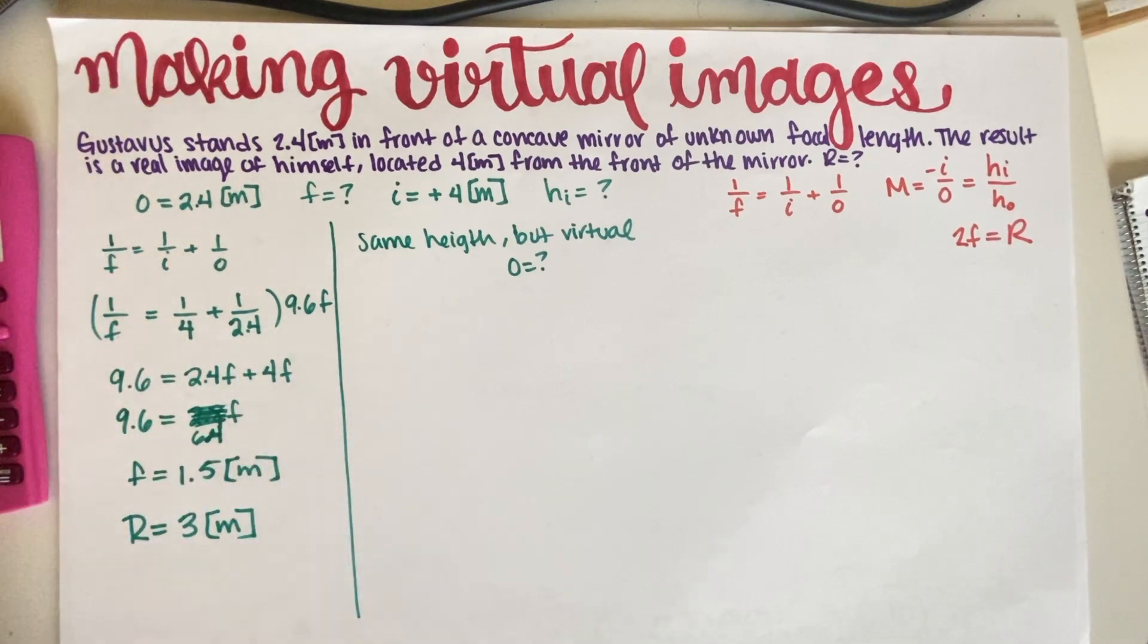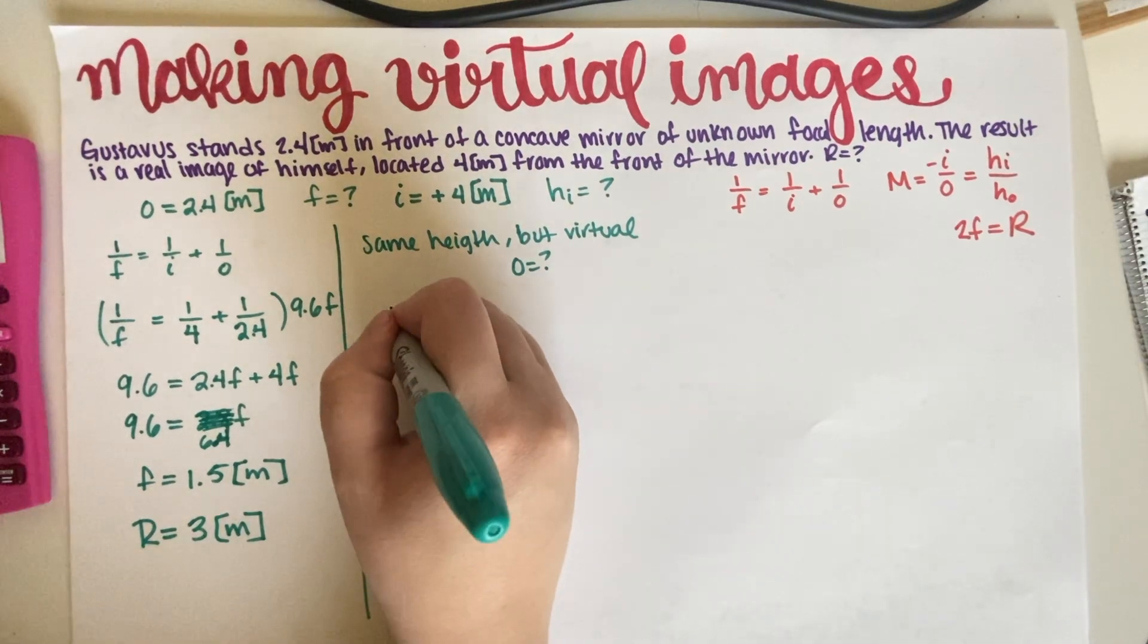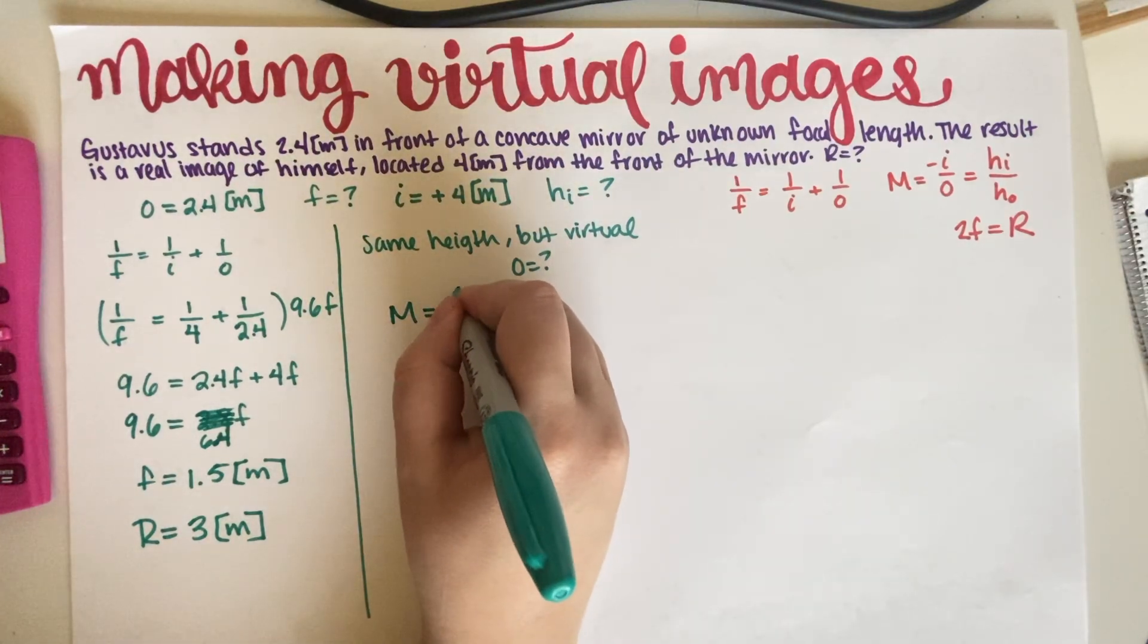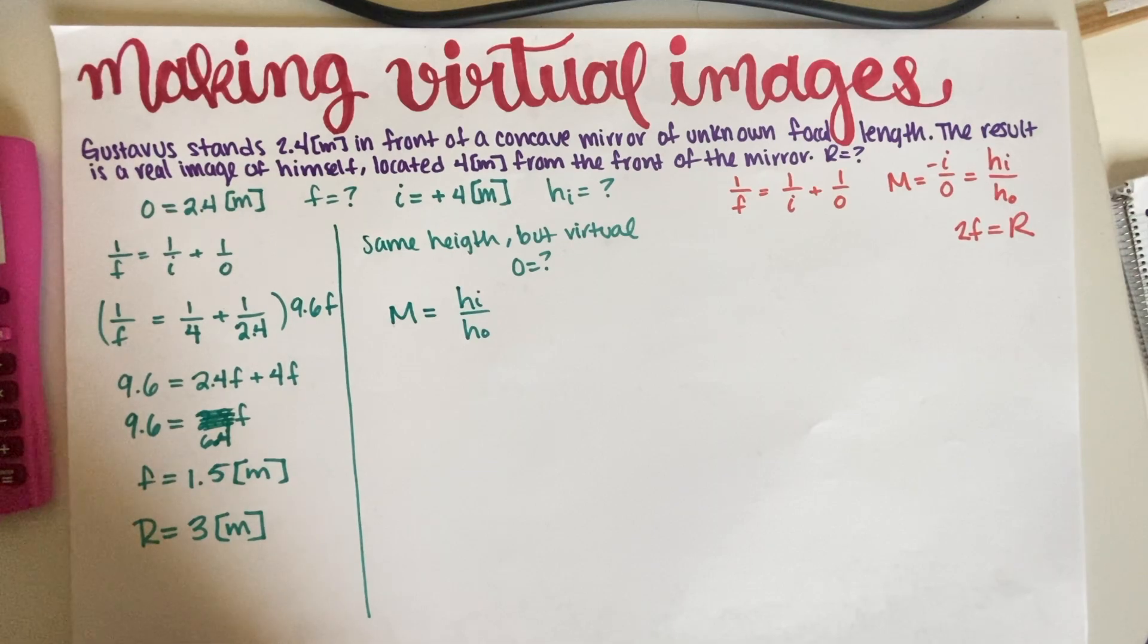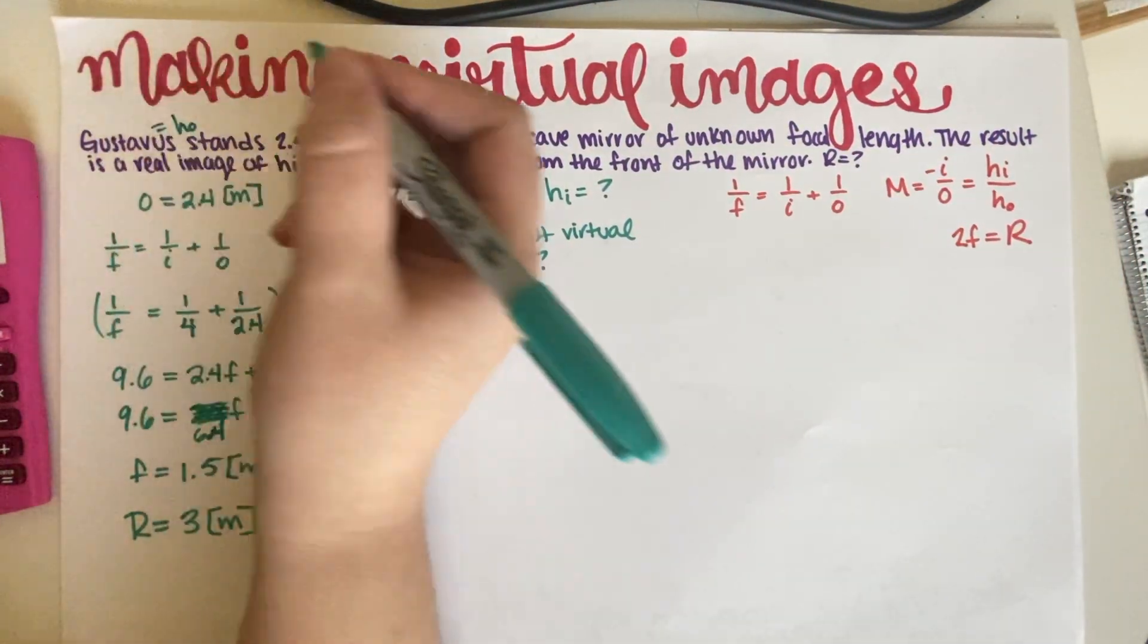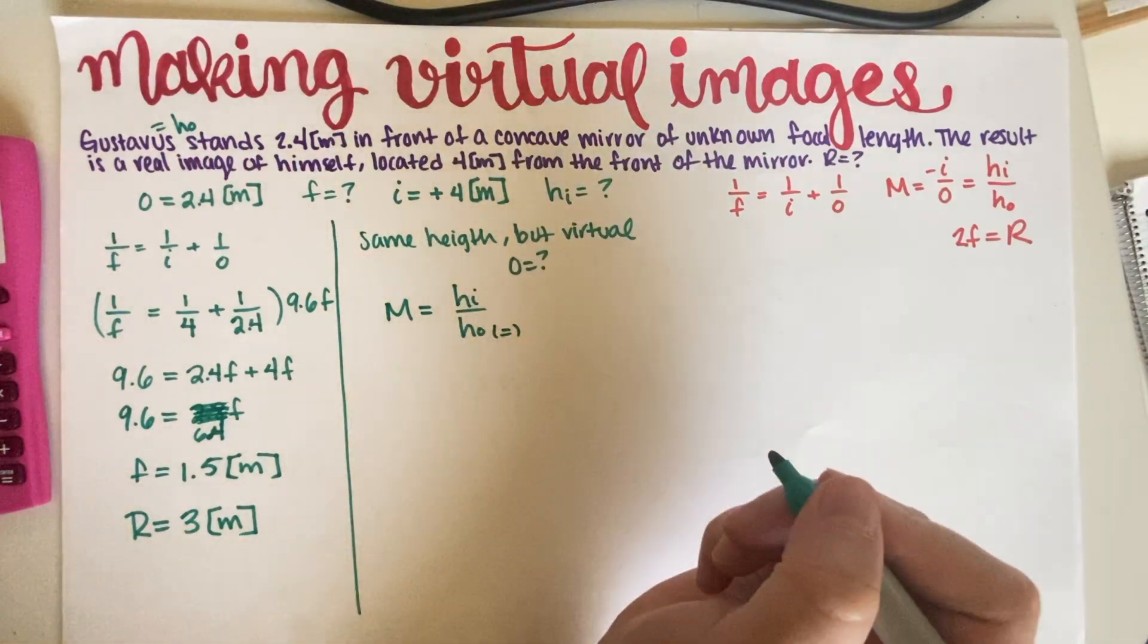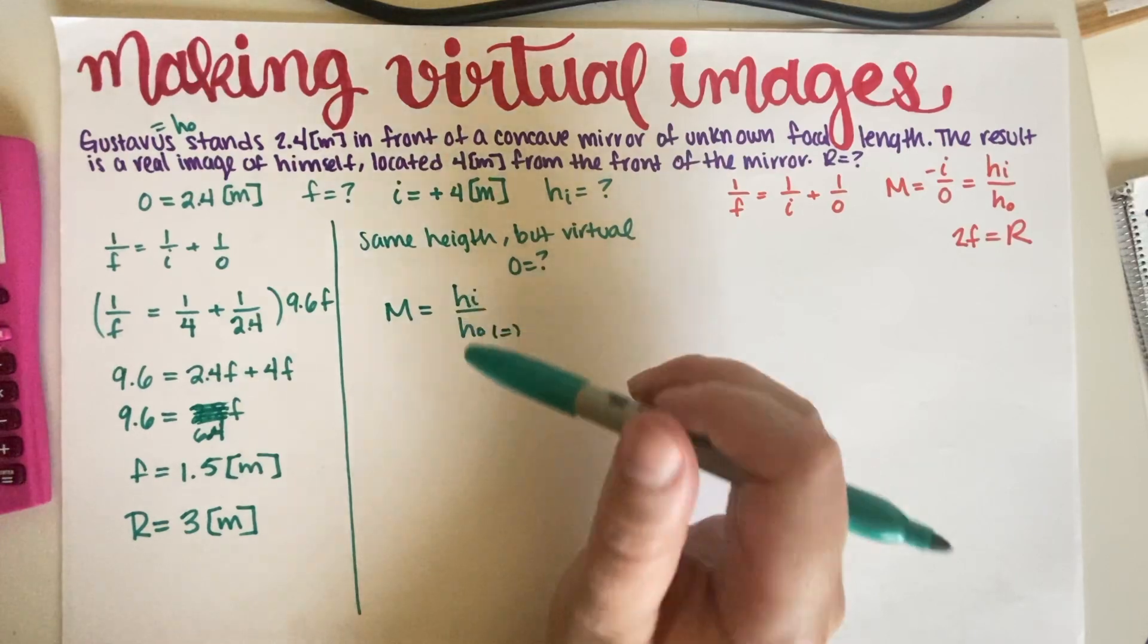So basically, where does he need to stand? Like, what's his new O position? All right. So if we look at the magnification equation, our magnification equation is HI over HO, right? Now HO for Gustavus is always going to be the same because Gustavus is the person and his height, we don't know his height, but it stays the same. His height is not going to change.